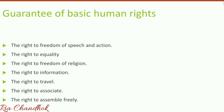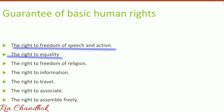In a democracy, every citizen has certain basic rights, also known as fundamental rights, that are guaranteed by the Constitution. These rights cannot be taken away by the state. The first is the right to freedom of speech and action — citizens can say and write what they think and feel without fear of reprisal; no one can tell you what you must think, believe, or say. The second is the right to equality — all are equal in the eyes of the law.